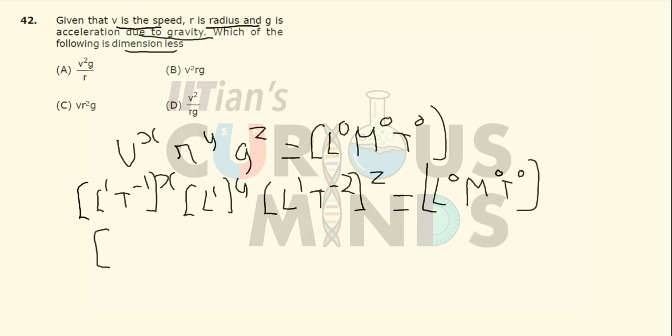It can be written as L raise to X plus Y plus Z into T raise to minus X minus 2Z will be equal to L raise to 0, M raise to 0 and T raise to 0.